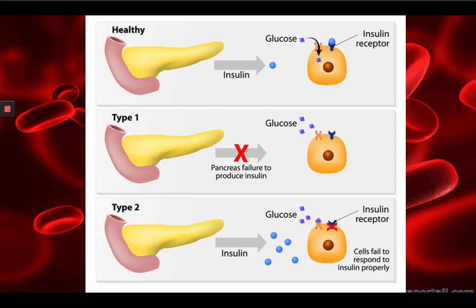This is where things go wrong in diabetics. In a normal individual, the pancreas produces insulin. The insulin acts like a key — it goes and unlocks the door that allows glucose to go into the cells. In type 1 diabetes, the pancreas fails to produce insulin, so you don't have a key to unlock the door. The door is closed, no sugar or fuel is going into the cell, and you're starving those cells from energy. In type 2 diabetes, the pancreas is producing insulin, but the lock has been changed, so the key does not fit the lock anymore. The door is not open, the glucose molecules cannot go into the cells, and glucose builds up in the blood vessels.